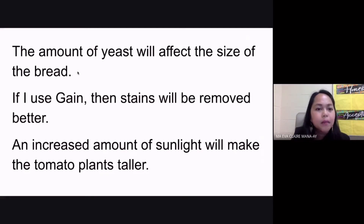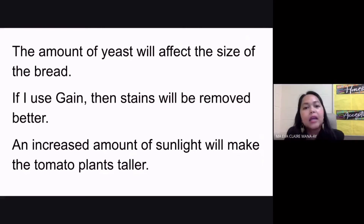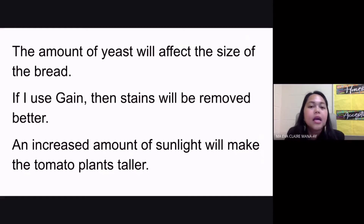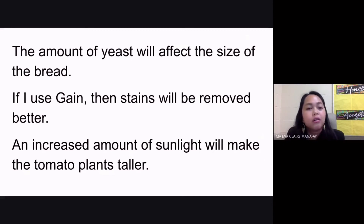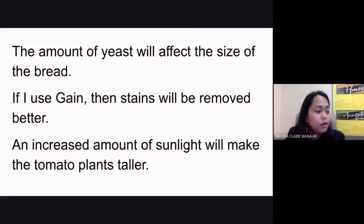Can anyone give examples of constants for hypothesis number one? Your control variables would include the type of bread you're making, the amount of water, the amount or number of eggs you're using, and the amount of baking soda or flour — those can all be your control variables.